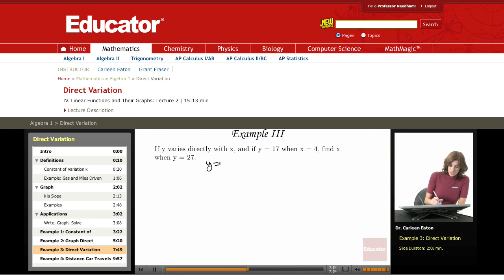We have a direct variation, y equals kx, because it tells us y varies directly with x. So that means I have a direct variation. And what I can do is find k. And if I can find k, that will allow me to find my unknown x.